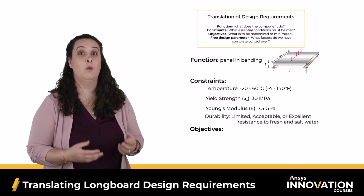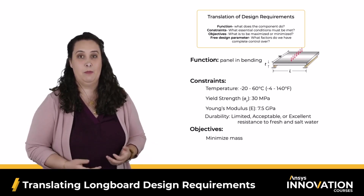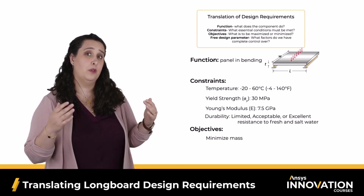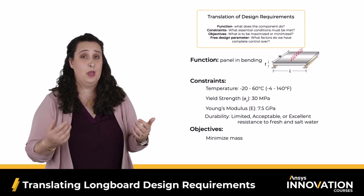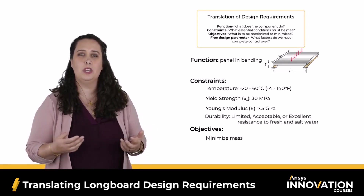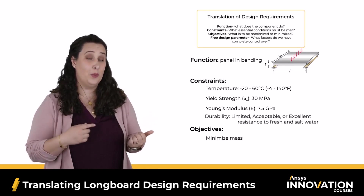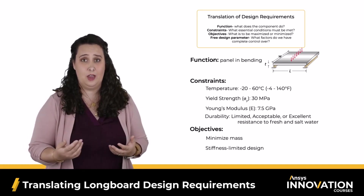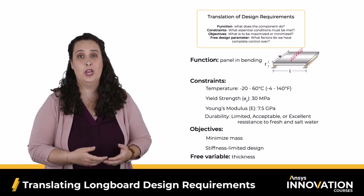Next we move on to our objectives — what are we trying to optimize for performance? One easy thing to identify is weight: like my climbing rope example, if I have to carry this by hand I want it to be as lightweight as possible. I also don't want the deck to deflect too much, which is related to stiffness, and it needs to withstand my weight plus a heavy school bag. While a minimum strength value is important — which is why we have that constraint — stiffness is the property we want to optimize, so we are dealing with a stiffness-limited design. The free design parameter is the thickness of the board.